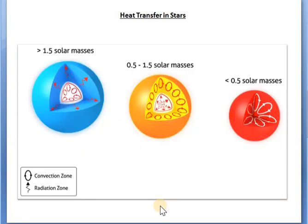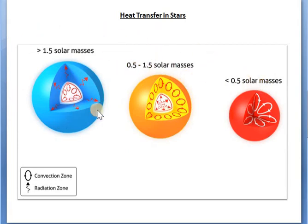This means that the internal structure of a main sequence star depends upon the mass of the star. Here I have shown three cases: the very low solar mass stars with less than 0.5 solar masses, the intermediate category which includes our Sun, and the higher mass stars. I have also shown the convective zone and the radiative zone for each case.